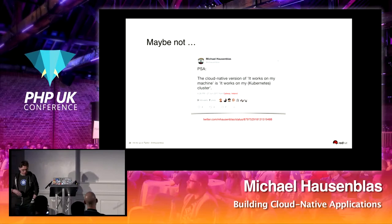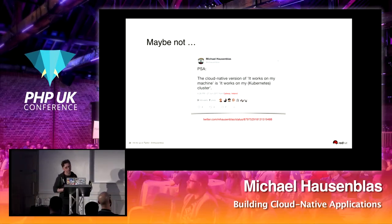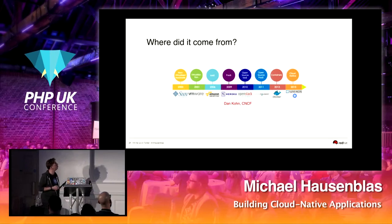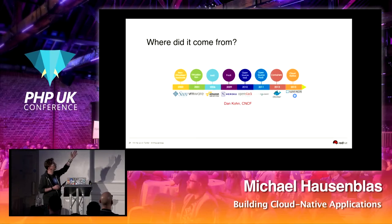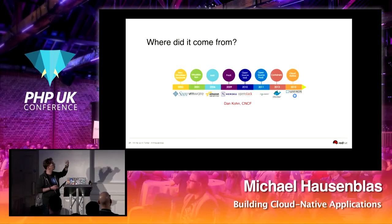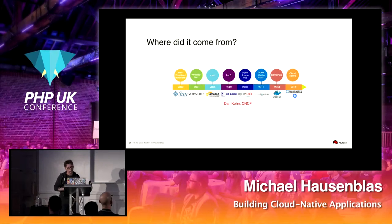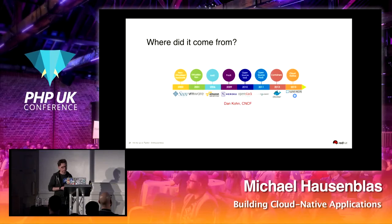You know the old saying 'it works on my laptop' — the cloud-native version might be 'it works on my Kubernetes cluster.' Cloud native inherits from Sun's virtualization work, VMware, AWS EC2, Heroku, OpenStack, Cloud Foundry, and Docker in 2013, which essentially reinvented containers and made them actually usable with excellent UX. Then in 2015 came Kubernetes and the Cloud Native Foundation, taking the best of all those previous projects and combining them.